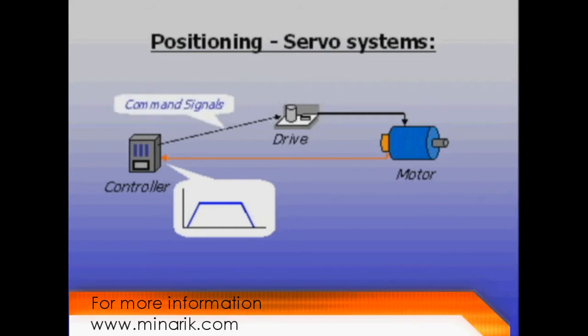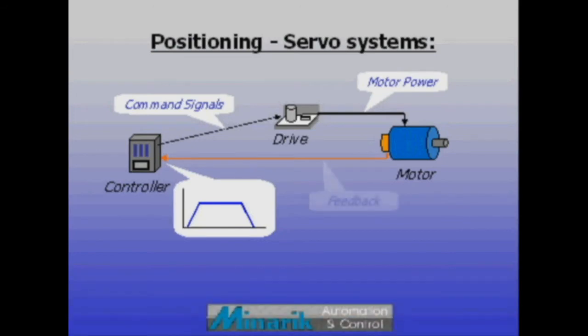The controller then issues commands to the servo drive and the drive energizes motor windings to create movement. Either on the motor or somewhere on the load, an encoder will be sensing positional movement and sending pulses back to the motion controller.